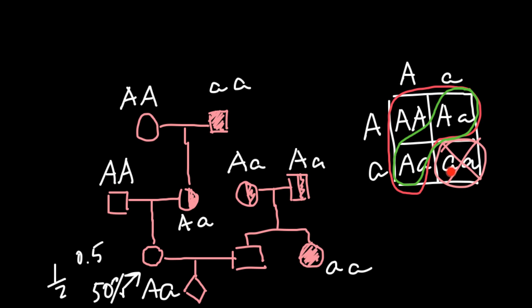He is phenotypically normal, and his probability to be a carrier is 2 out of 3 — not 2 out of 4 or 50%, because we already know he doesn't express this genetic disorder. He belongs to the phenotypically normal group, and within that group his probability of being a carrier is 66.6%, or two thirds.